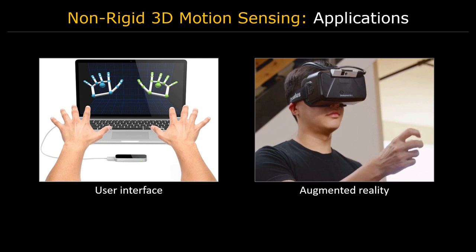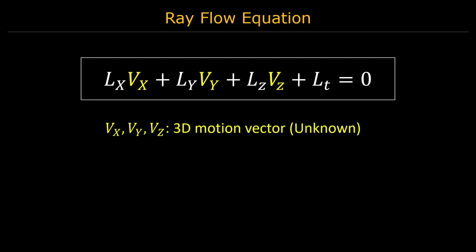In this paper, we propose a novel approach for recovering 3D scene motion from light field gradients. Our approach is based on the derivation of a new linear constraint, the ray flow equation, which relates the dense 3D motion field of a scene to gradients of the 4D light field.